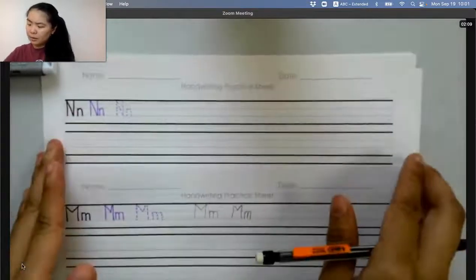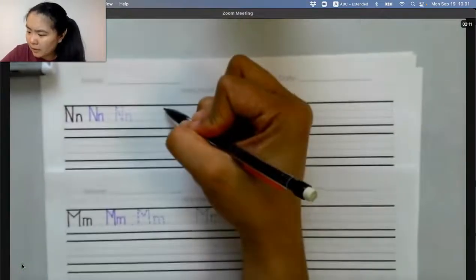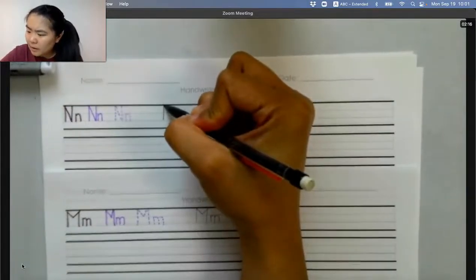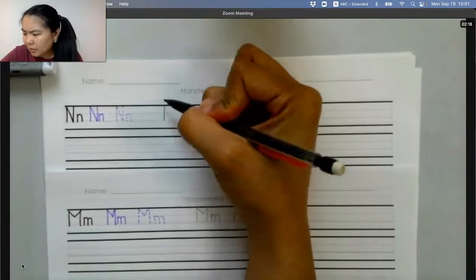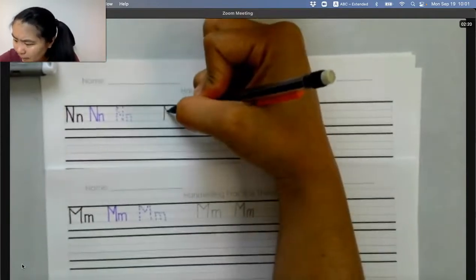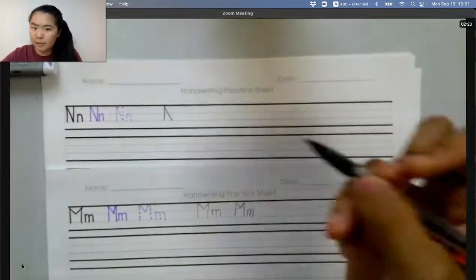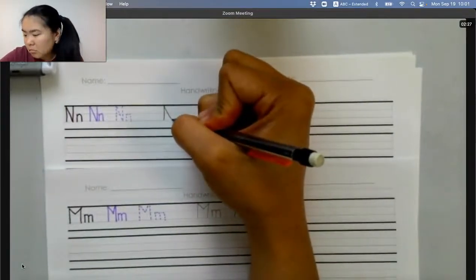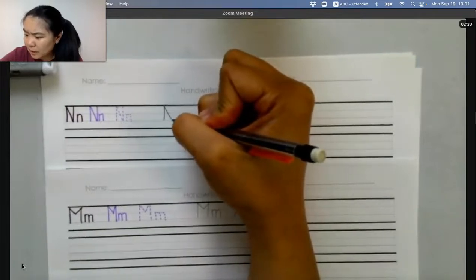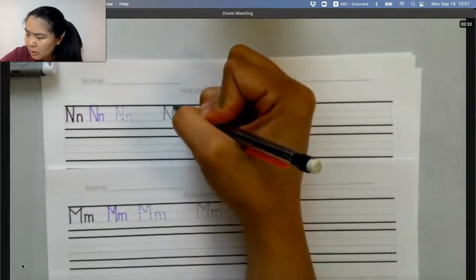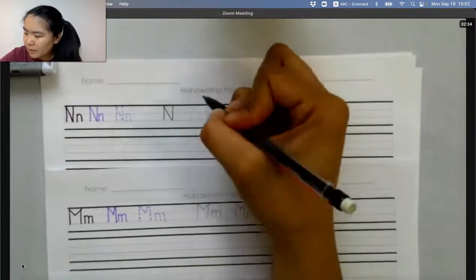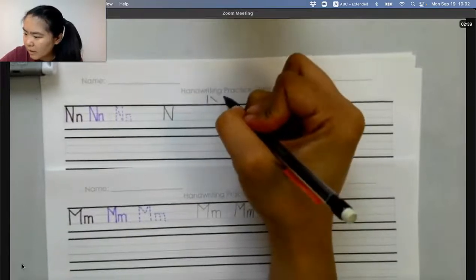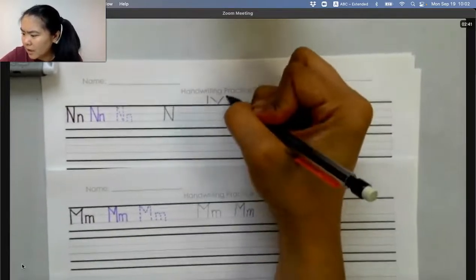And so to write the letter N, we start all the way at the top with a big line. Go back to the top and draw a slanted line to the bottom. And then probably easier to start at the bottom from this line and go straight to the top. So this is straight. This is slanted. This is also slanted. This is straight.